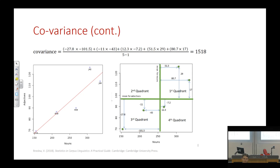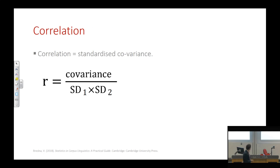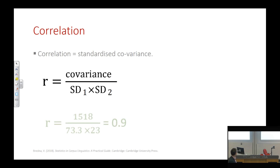Covariance is usually a fairly large, non-standardized number, so we go one step further to look at correlation. Correlation is a standardized measure of covariance — we take covariance and standardize it using the standard deviations of both variables. If we plug in the numbers from our real data set, we get something like 0.9, which is a very high positive correlation value.